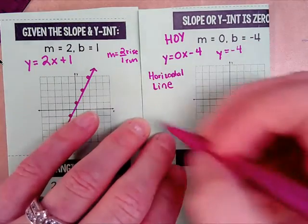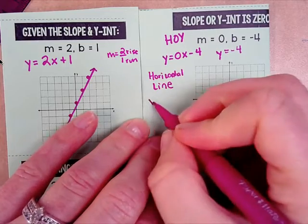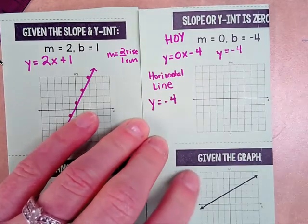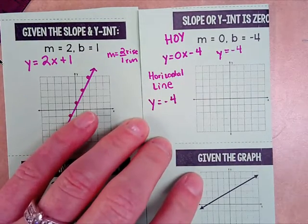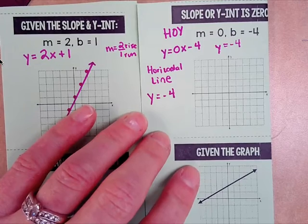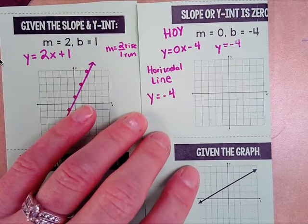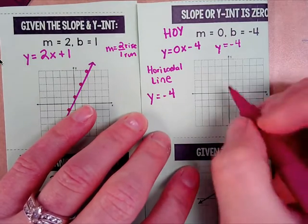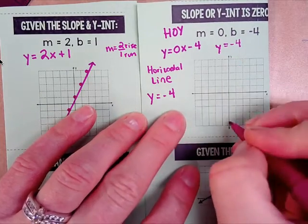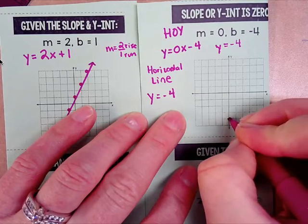Horizontal, 0 slope, y equals negative 4 — it's a horizontal line. Go to the y-axis, go to negative 4, and it's just a horizontal line.